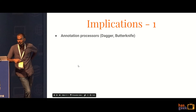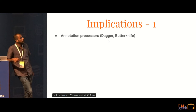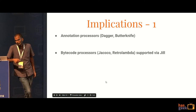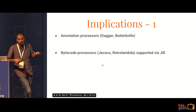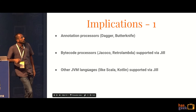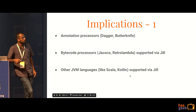What are the different implications of running this? Any annotation processors that you might be using like Dagger or ButterKnife would still run. Any bytecode processors would also run like Jacoco or Retro Lambda. However, you would probably not use Retro Lambda if you're using the Jack toolchain. Any JVM languages that you're using would be supported by Jill.